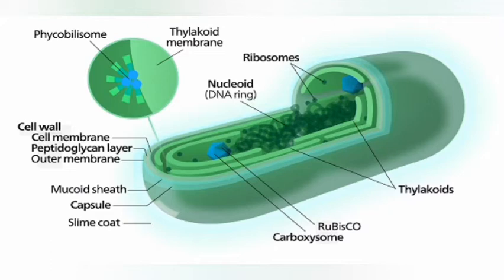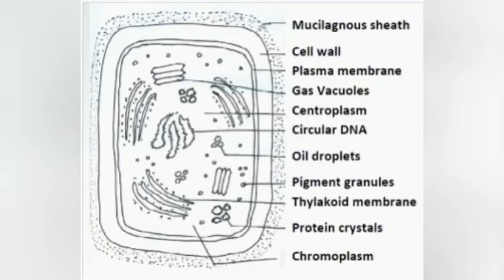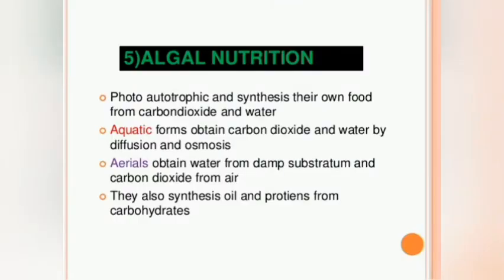The ICBN uses certain suffixes to group Algae. The suffix for division is -phyta, for class it is -phyceae, for order it is -ales, and for family it is -aceae. You can ask why cyanobacteria are considered as Algae but note that they are not related to any Algae group. This is a question you can ask your teacher. Write your answer in the comments and I will respond.